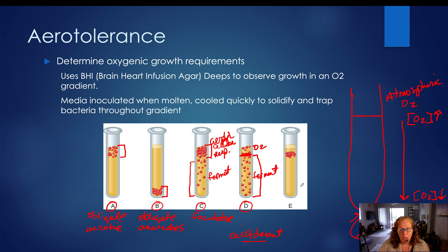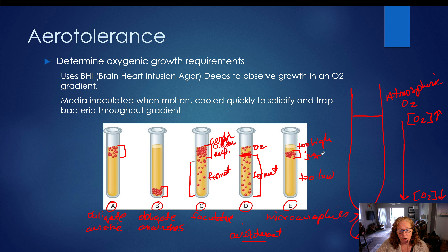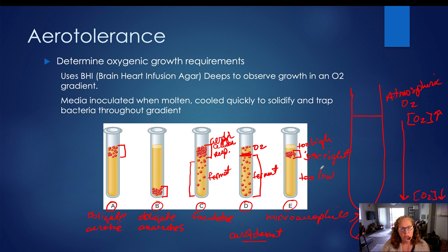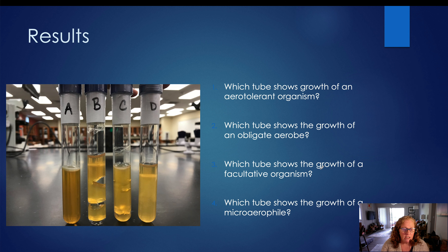Our last organism is a microaerophile. Microaerophiles are what I refer to as the Goldilocks of the oxygenic requirement world. These organisms will not grow where oxygen levels are too high, and they won't grow where oxygen levels are too low. They only grow where levels are just right — they require oxygen, but in a very specific concentration. They can't grow if it's too much or too little; they're very picky. This is a set of aerotolerance tubes from our actual laboratory at Central Campus, and these tubes show everything except for an obligate anaerobe — we do not have the equipment to grow an obligate anaerobe in our laboratory.